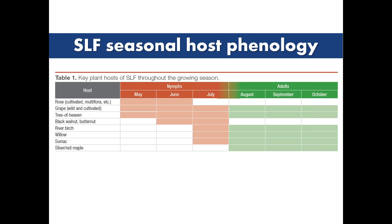Part of why Spotted Lanternfly is so difficult to control is that they move through the season. We often find them on rose early in the season, on grape and Tree of Heaven throughout the season, and on black walnut and butternut in the nymph stage in June and July. As soon as they become adults, they move and wind up on river birch, willow, sumac, or silver or red maple. There are these population shifts as the season progresses.